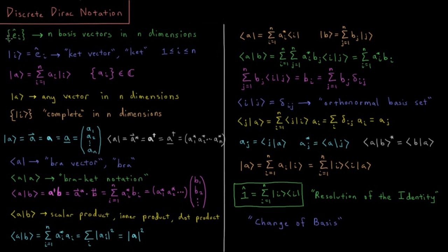As we saw in our previous video on vectors, if we want to represent a vector in n dimensions, we have n basis vectors that we can use, and we represent it with those coefficients.